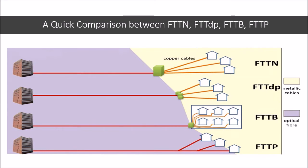The technologies differ with each other based on the length of fiber that runs towards the customer premises. In the image we can see that FTTN, or fiber to the node, reaches out the least towards the customer premise. It is followed by FTTDP, which stands for fiber to the distribution point, and FTTB, or fiber to the building. FTTP on the other hand uses only fiber and no metallic cables, and is capable of carrying extremely high data speeds due to the availability of enormous bandwidth, compared to the limited bandwidth offered by copper cables.